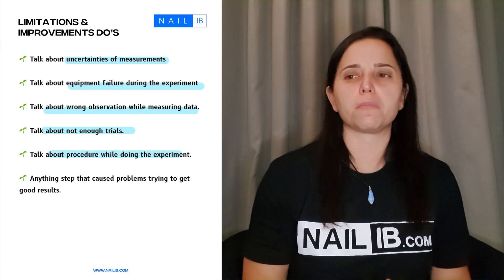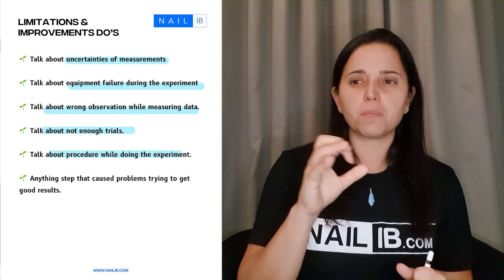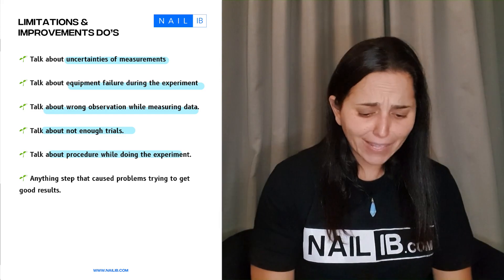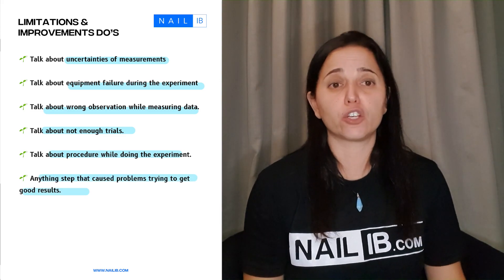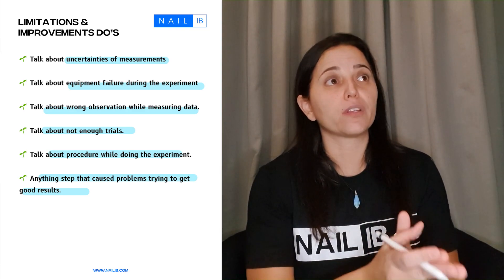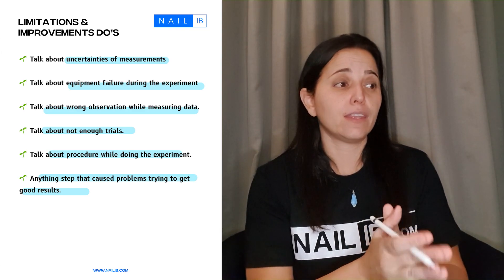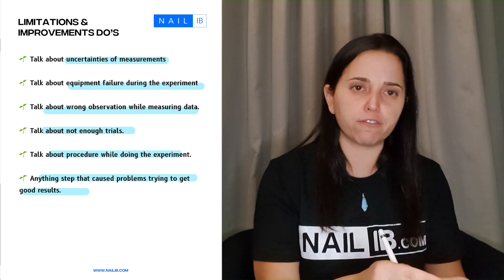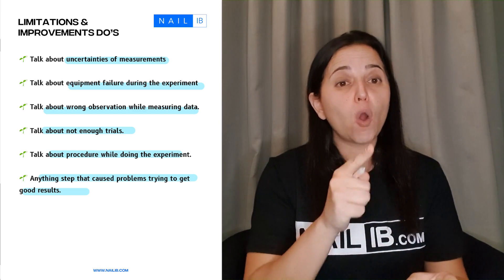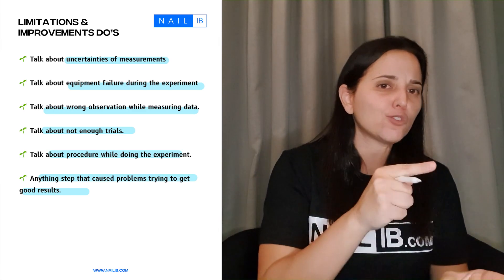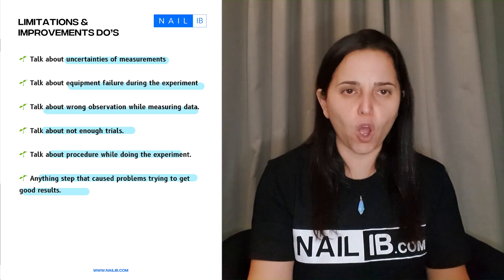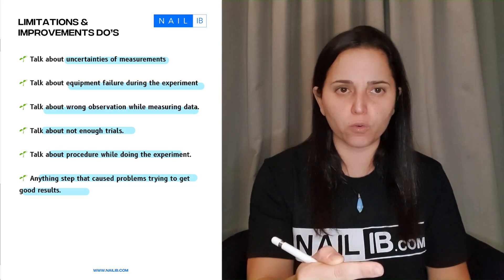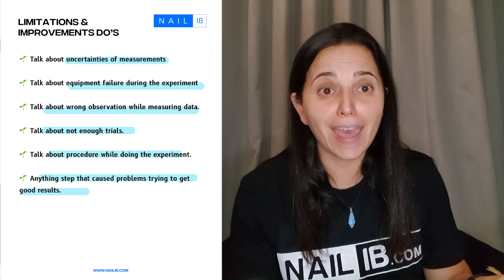A lot ask 'wouldn't I get point off?' No, you do not get point off from mentioning them, but you do get points if you don't know how to explain how to fix them and why those movements that you did could have caused problems to your results. If you mention the mistake, and you mention how this mistake could have affected your results and how to fix in the future, that's excellent. That's actually what they want for the limitations and improvements.